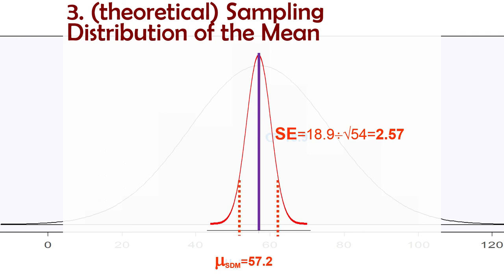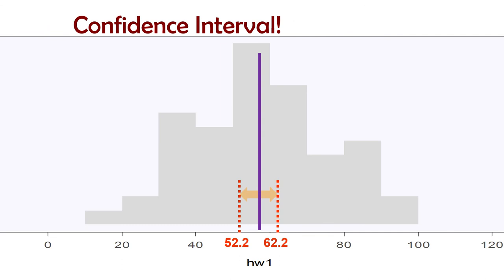Then we use z-scores and the normal approximation to figure out the middle percent of the sampling distribution. There's our confidence interval: 52.2 to 62.2. Our sample mean is 57.2, and our confidence interval is 52.2 to 62.2.